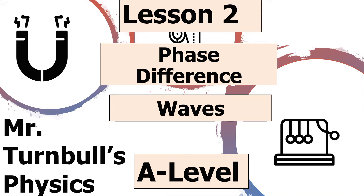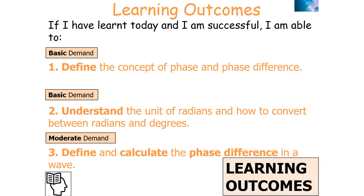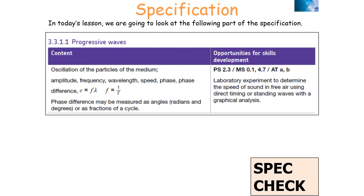Hello, and welcome to this lesson on phase difference, which is part of the waves topic for AQA A-level physics. In today's lesson, we're going to look at how you can describe phase difference. By the end, we should be able to define the concept of phase and phase difference, understand the unit of radians and how to convert between radians and degrees, and define and calculate the phase difference in a wave, which is part of the AQA A-level physics specification for waves in 3.3.1.1 progressive waves.